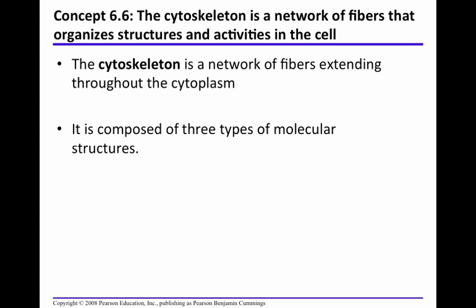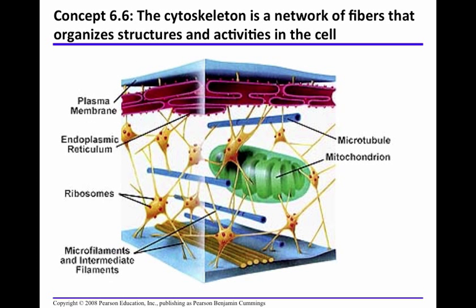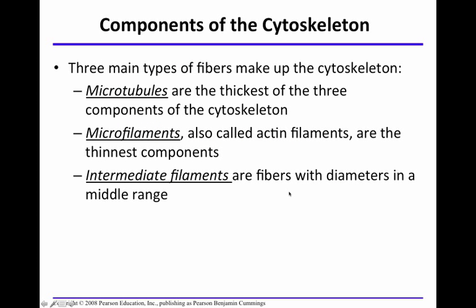The cytoskeleton is composed of three types of molecular structures: microtubules, as seen here in blue; microfilaments; and intermediate filaments. Microtubules are the thickest of the three. Intermediate filaments are in between in size. And microfilaments are the thinnest.